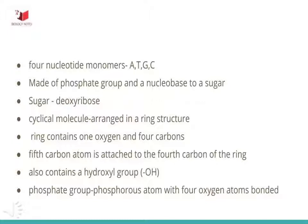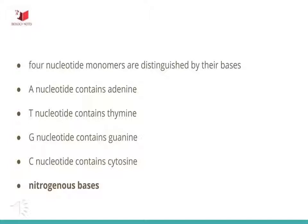The phosphate group is a phosphorus atom with four oxygen atoms bonded to it. The phosphorus atom in phosphate has a marked tendency to bond to other oxygen atoms — for instance, the oxygen atom sticking off the deoxyribose sugar of another nucleotide. The four nucleotide monomers are distinguished by their bases. Each type of nucleotide has a different nucleobase stuck to its deoxyribose sugar: A contains adenine, T contains thymine, G contains guanine, and C contains cytosine. All four nucleobases are relatively complex molecules, with the unifying feature that they all tend to have multiple nitrogen atoms in their structures. For this reason, nucleobases are often also called nitrogenous bases.